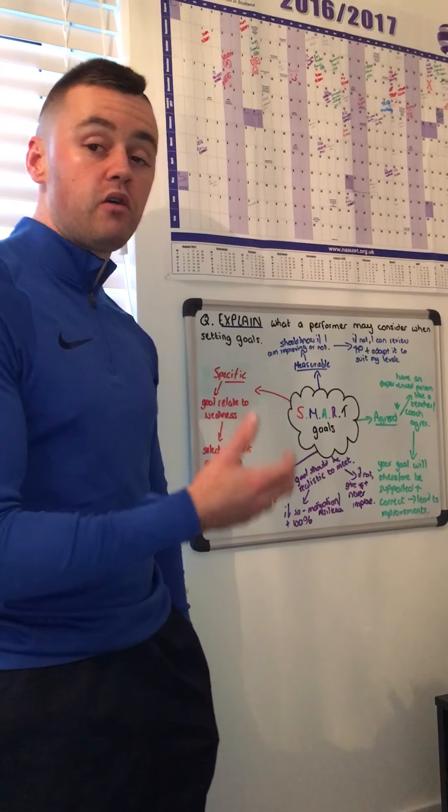The first thing we'd look at is the S — Specific. Now we do not give a mark for saying that Specific means we have a goal that relates to our weakness. You must include that because you need to define what Specific means, but you don't get the mark for it. However, you get your mark by building up with linking phrases and giving the positive impact. As a result of having a specific goal that is relevant to my weaknesses, I could then select the relevant and correct approaches that will allow me to improve my weaknesses. And that's where you'd get your mark.